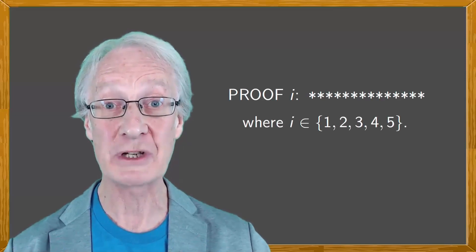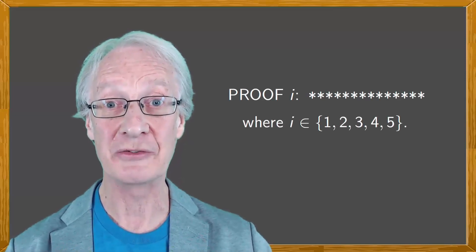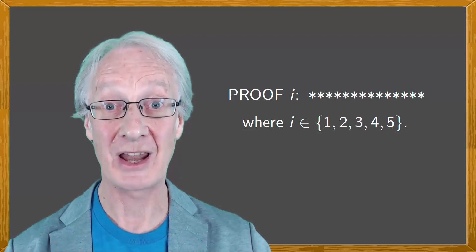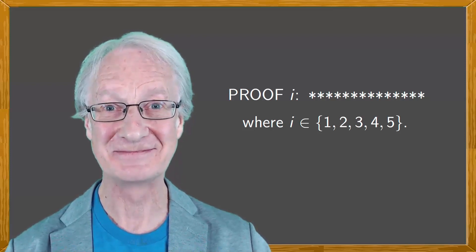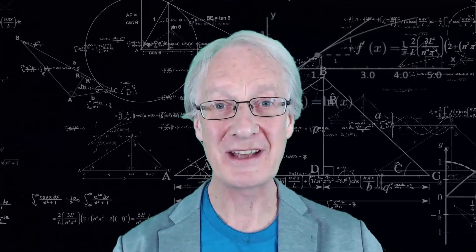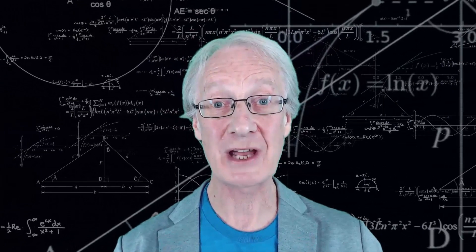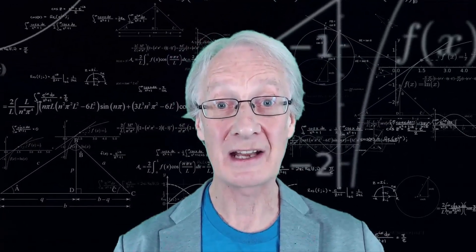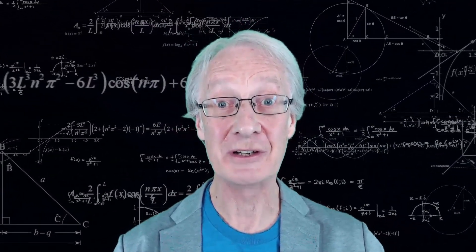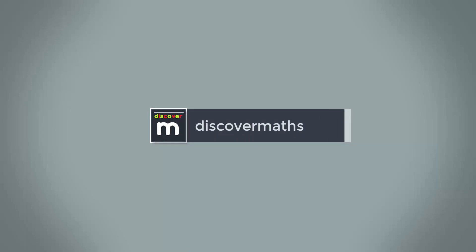There you have it — five completely different proofs as to why 1 equals 0. In the comments below, let us know where you think the error or errors are, and reference which of the proofs one through five you're referring to. Let the debate begin! I hope you found this fun and interesting. Please subscribe to our channel if you haven't already, and I'll see you again very soon to discover more maths.